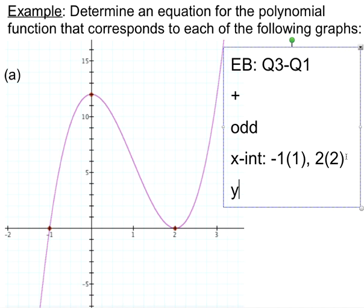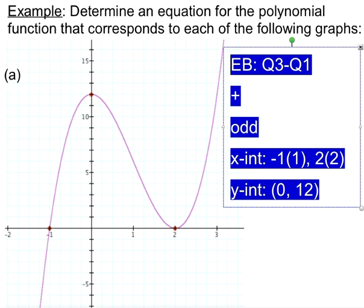Last thing we want to identify: we have a y-intercept that crosses through here at 12. So our y-intercept is the point (0, 12). Let me just make this a little smaller so we've got some space to work.